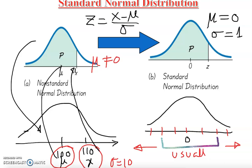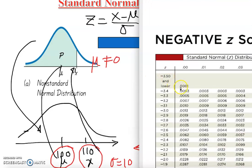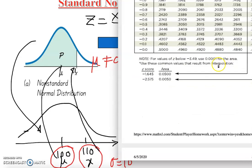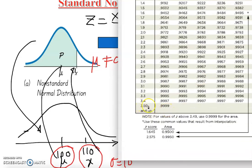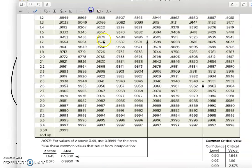We never go beyond three standard deviations in practice. If you see a z-score of 3.5 or higher, it is approximately equal to one in the z-table. If you see a z-score of negative 3.5 or lower, it is approximately zero. For example, if your z-score is negative four or negative five, by default the table value will be near zero; and if it's positive seven, by default it's approximately 0.9999, which is essentially one.